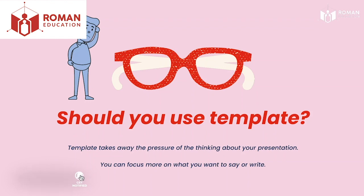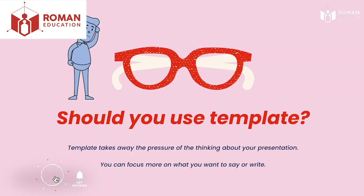AC writing can be quite challenging because sometimes the topic you get in the exam can be unfamiliar, and even if the topic is familiar, you may not have enough ideas to write in your essay. If you have a template, you have less pressure thinking about presentation and can focus more on content. In AC writing, out of 15 points per essay, 12 come from presentation and only 3 from content, so using a template accomplishes a large part of your task.